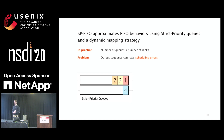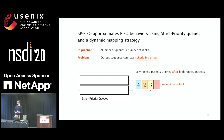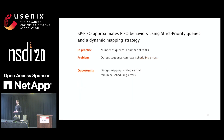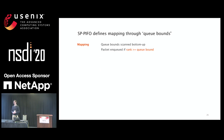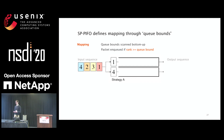To illustrate scheduling errors: with two priority queues, if packets with ranks 1 to 3 are mapped into the highest priority queue and rank 4 into the lowest, draining those queues produces a scheduling error — a packet with rank 3 is drained before a packet with rank 2, which would not occur in PIFO. We can minimize these errors by defining mapping strategies using queue bounds, which are thresholds determining whether a packet with a certain rank can be mapped into a specific priority queue.